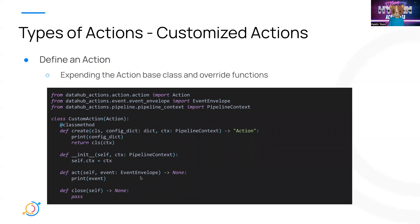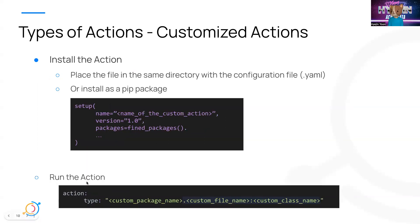Customizing actions is also possible, which gives you a lot of flexibility within the framework. You can make your own action within the action framework following these steps. First, you define the action by extending the action base class in Python and overriding its functions. It'll basically have three functions — create, act, and close — where the act function contains the main logic of the action. After defining the action, you can either place the file in the same directory or install it as a package. Then you run the customized action by declaring the custom package name, custom file name, and custom class name.